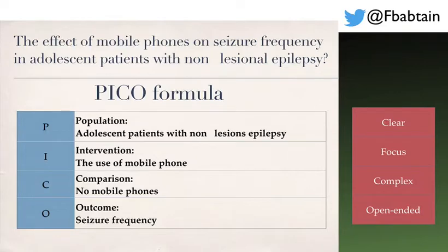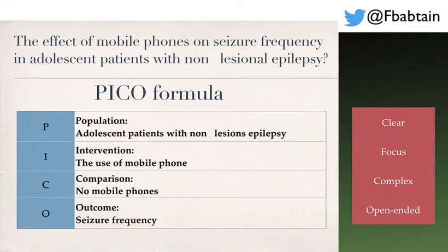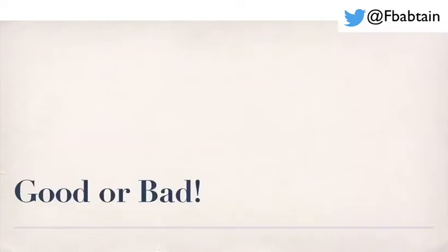Let's apply the PICO formula to this question. The population is adolescent patients with non-lesional epilepsy. The intervention is the use of mobile phones. The comparison is no mobile phone use. The outcome is seizure frequency. I hope the PICO formula is now more clear once we apply it to this example.